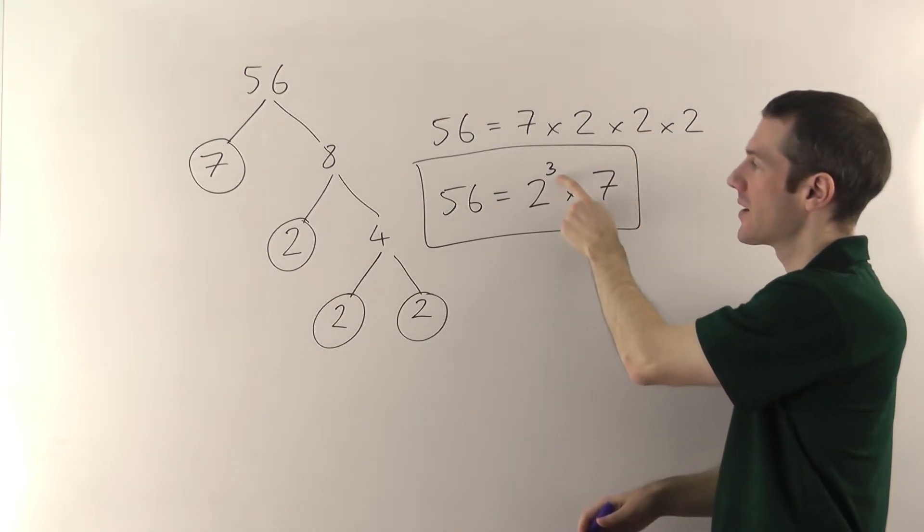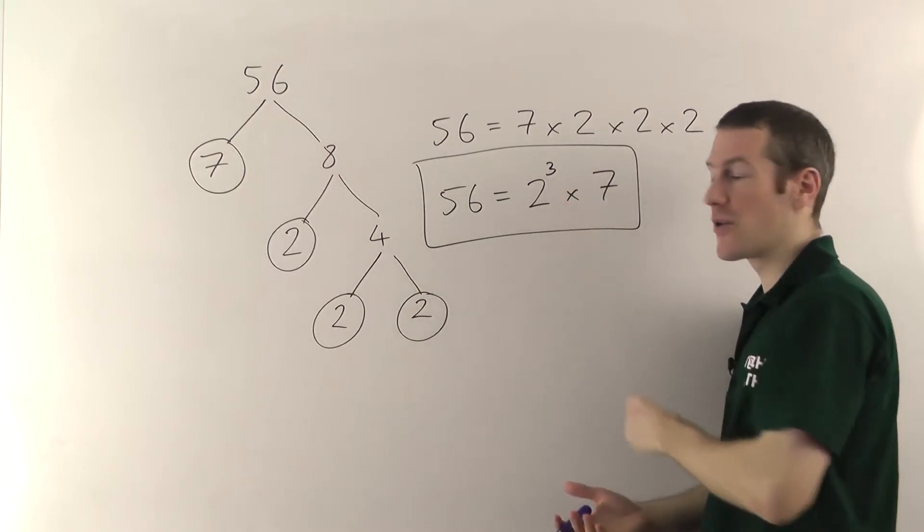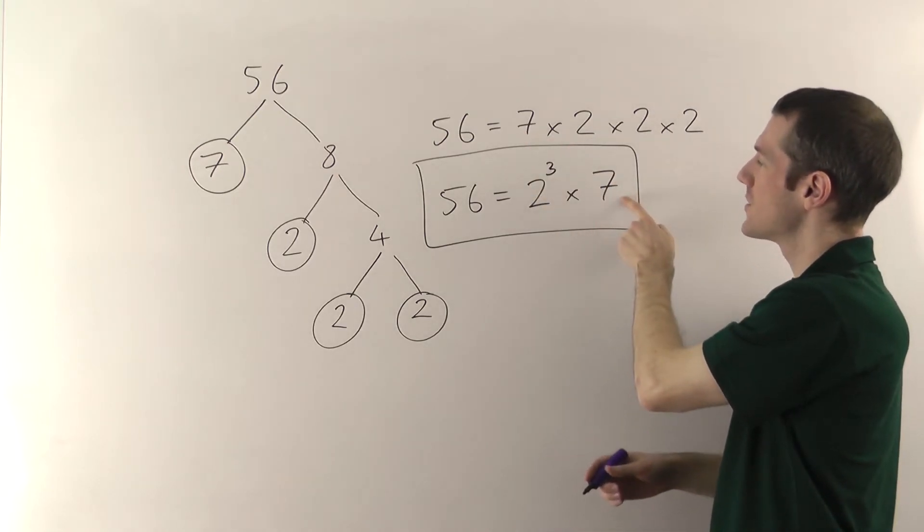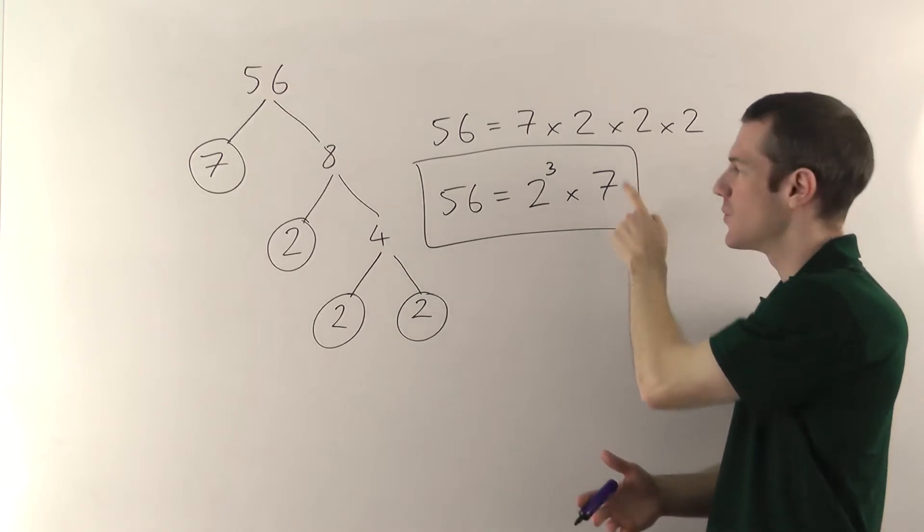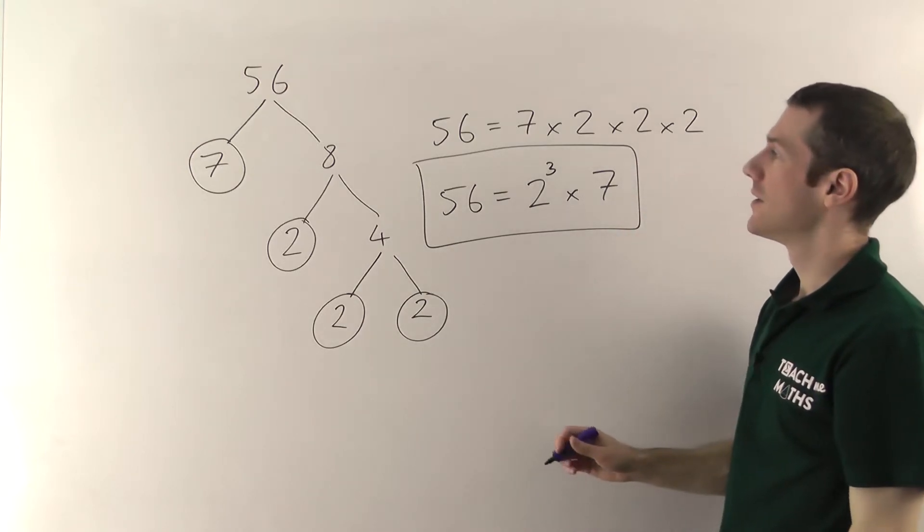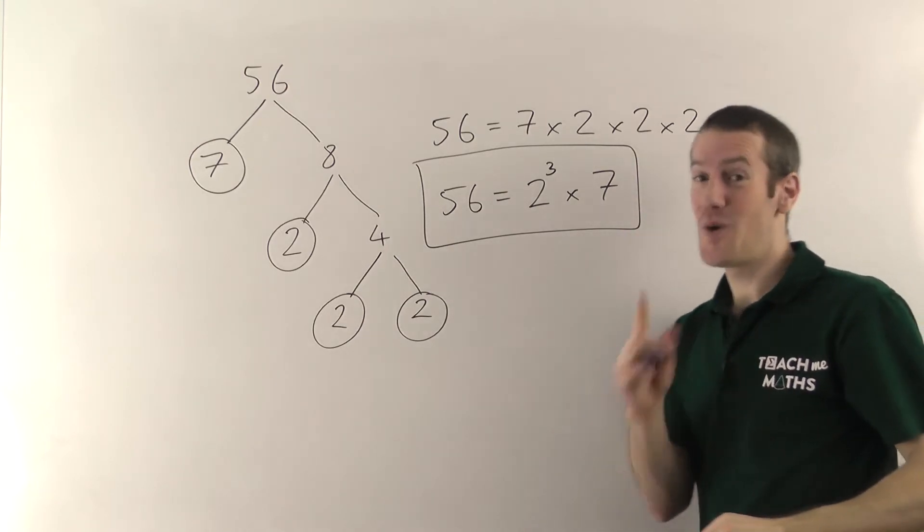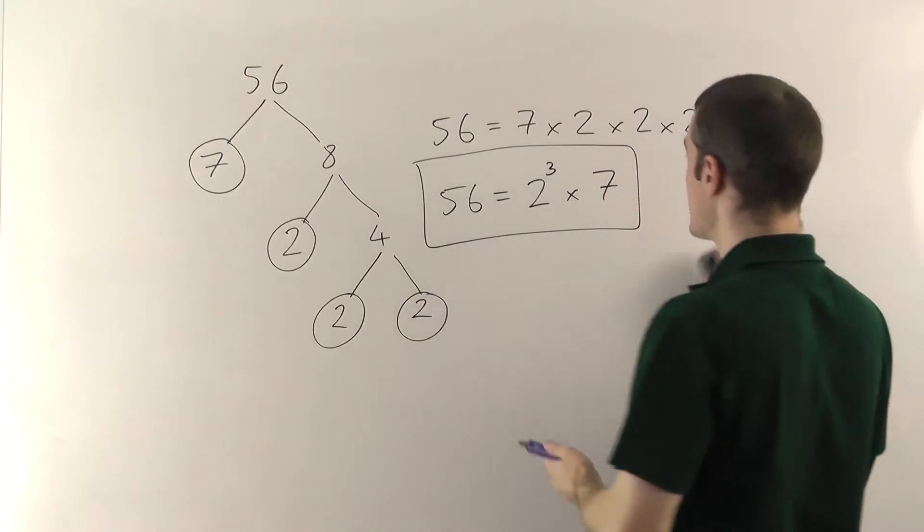So there are 3 2s multiplying, that's why we're cubing, we're putting a power 3 there. There's only one 7, so the power of the 7 is, there's a kind of imaginary one there, but there's only one 7. Okay, hopefully that makes sense. I'll do one more example, but that's it really. There's not a lot more to it.